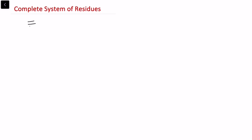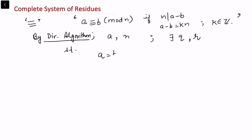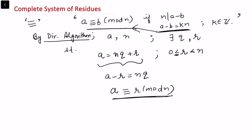In this video I will be talking on complete system of residue in connection to congruences. In the last video we defined congruence: a is congruent to b modulo n if n divides a minus b, or a minus b equals k times n for some integer k. By the division algorithm, for integers a and n, we can write a equals n times q plus r, where the remainder r satisfies 0 ≤ r < n. This gives us a minus r equals n times q, which means a is congruent to r modulo n.